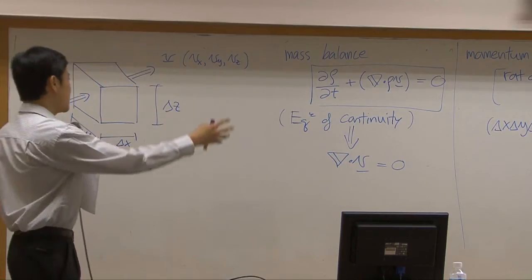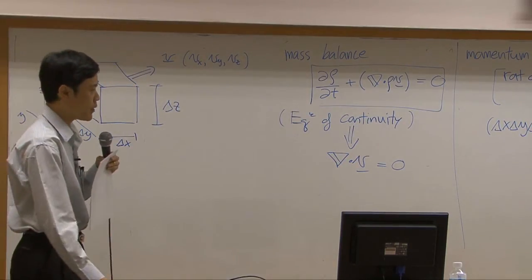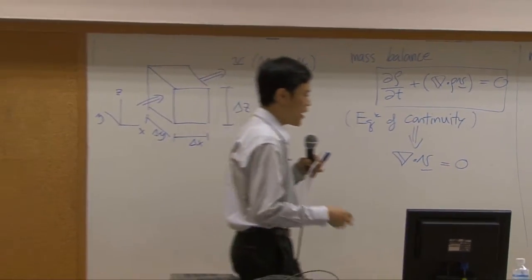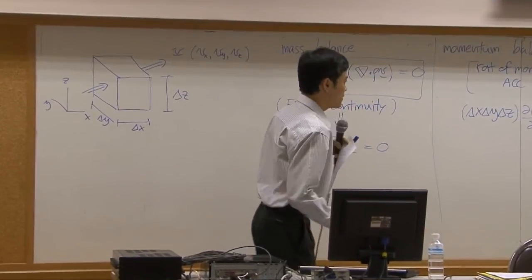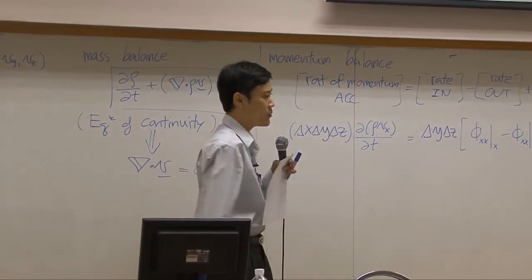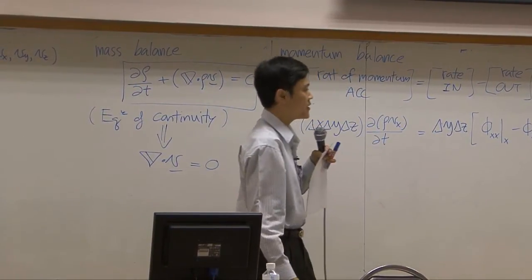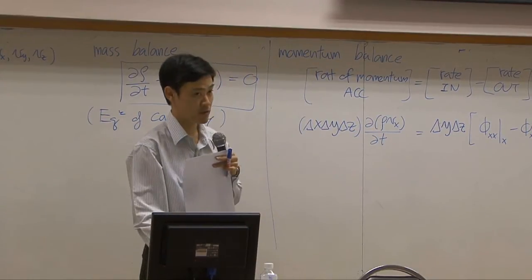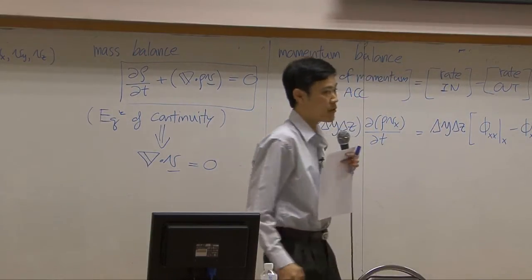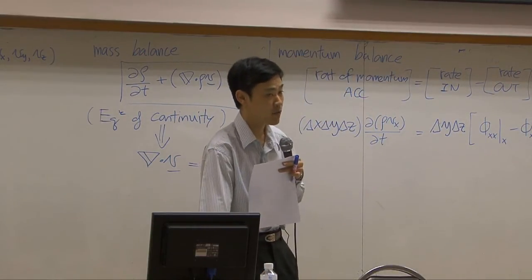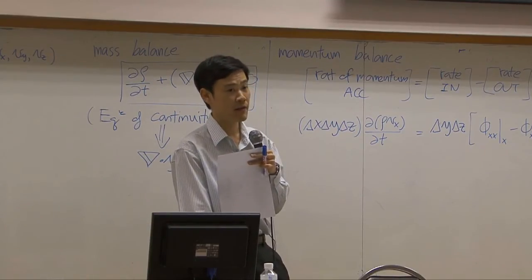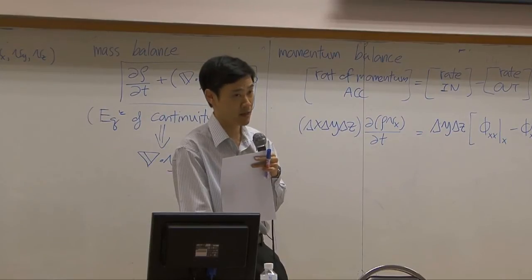Let's come back to our general shell, the cubic with the size delta x, delta y, delta z. Now, we are going to do a momentum balance. Equation for momentum balance would be accumulation, rate of momentum accumulation, equal to rate of momentum in minus out plus sum of force. And the term sum of force here can be thought of as a generation of momentum by external force. And usually, by the conventional flow, external force would be force from gravity.